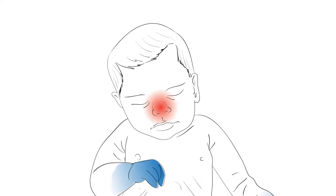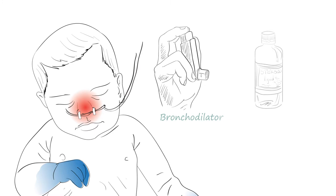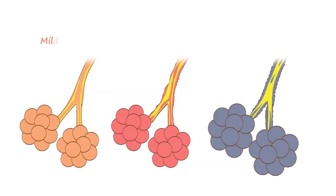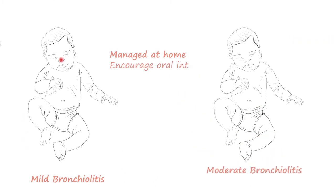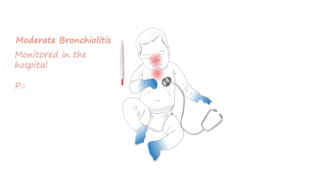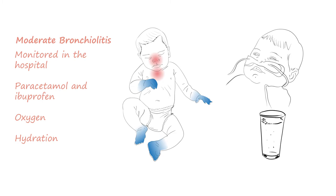Management is largely supportive, focusing on maintaining oxygenation and hydration. Evidence suggests no benefit from bronchodilators or corticosteroid use in infants with a first episode of bronchiolitis. Mild bronchiolitis is easily managed at home with encouragement of oral intake. Moderate bronchiolitis with increased work of breathing can be monitored in hospital; paracetamol and ibuprofen can be given for temperature and symptom relief. Oxygen can be given to maintain oxygen saturation above 92%, and nasogastric feeding should be considered if oral hydration is inadequate.